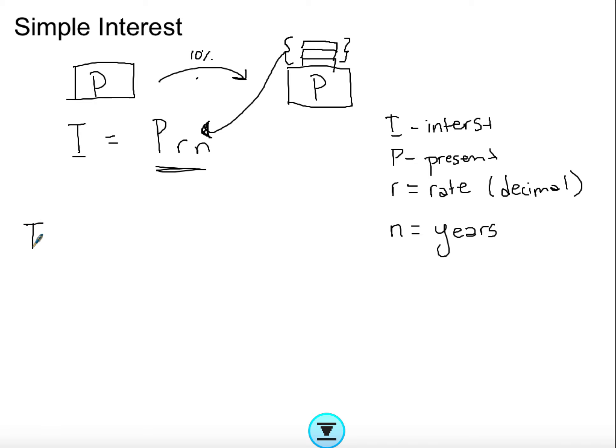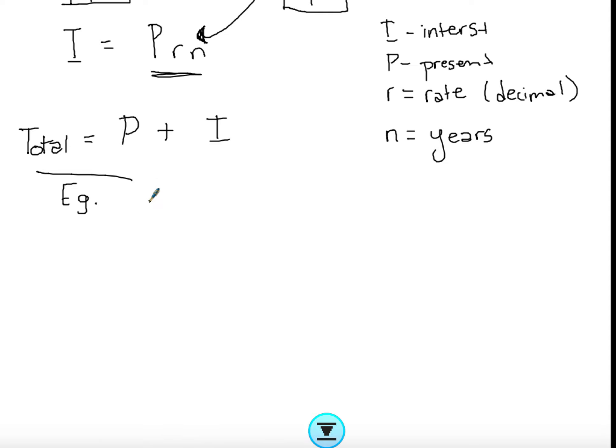Once you've found your interest you can say the total is the present value that I started with plus the interest that I've calculated added on top. If we start with a simple example, say I have an investment of $500 at a rate of 3.6% for five years. Notice how the rate I'm talking about is not in a decimal, it's in a percentage, which is why I'm not really happy with this notation that they use usually. Just be careful with this.